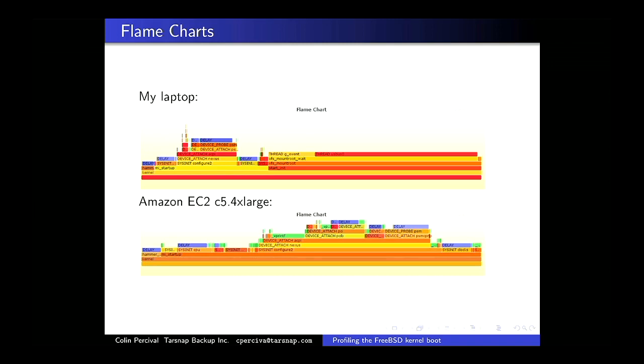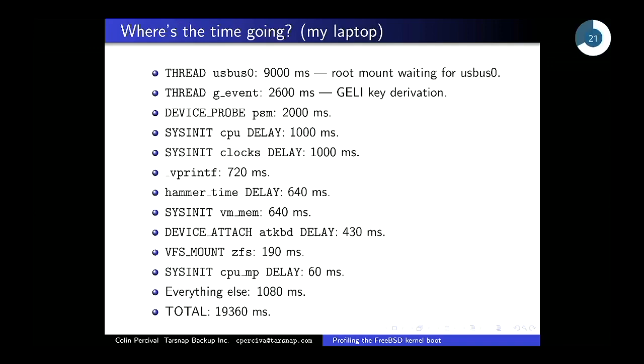The green time is time within the printf function including its children. It's not actually time spent parsing the printf string — almost all of it is time spent printing characters through the console. So printing to the console is very slow.